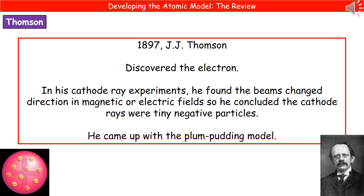Our second scientist is JJ Thomson, jumping forward 94 years from the work of Dalton. The key discovery Thomson made was that he discovered the electron. He did this through experiments involving cathode rays, finding that beams of cathode rays change direction when they pass through magnetic or electric fields. Because of that, he concluded that the cathode rays were made of tiny negative particles, which he called the electron.